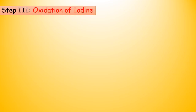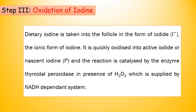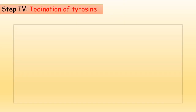Step 3 is the oxidation of iodine. The iodide that is taken from the blood by the follicular cell is not in the exact form that can be used. This iodide needs to be activated, or oxidized. It is quickly oxidized into active iodine, and the reaction is catalyzed by the enzyme thyroid peroxidase. The next step occurring in the lumen is iodination of tyrosine.